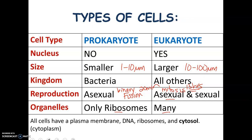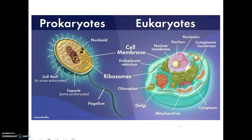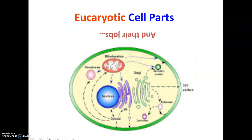All cells have certain things in common: they all have a cell membrane, they all have DNA, all cells have ribosomes, and all cells have cytosol or cytoplasm. Here's a picture that illustrates the difference — prokaryotes are very small, eukaryotes much bigger with all those cell parts inside. Notice in prokaryotes, the DNA is just in an area called the nucleoid, and you see ribosomes but no other cell parts.